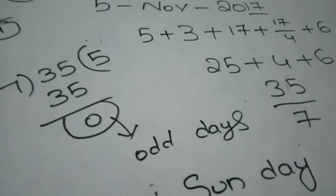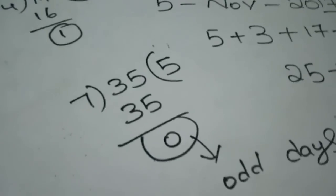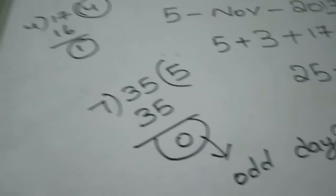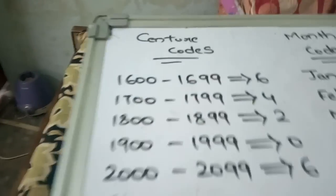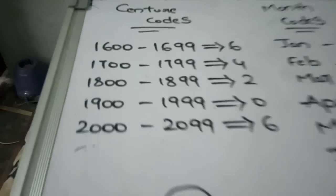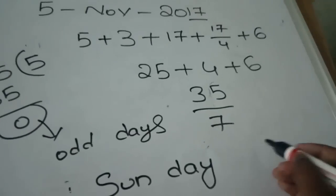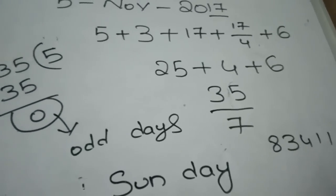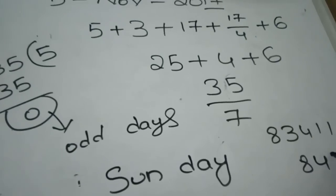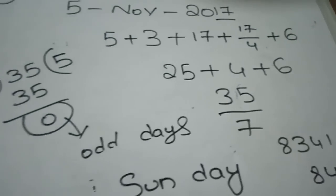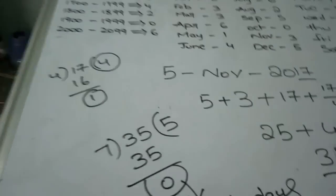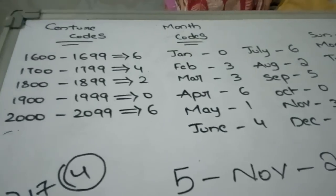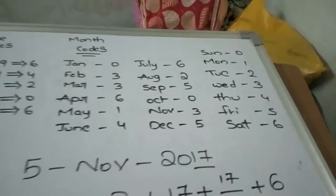You can calculate any day within 1600 to 2099 like this. If you have any doubt, call my number: 83411-84265. Remember the century codes, month codes, and day codes — that's it, it's a shortcut!